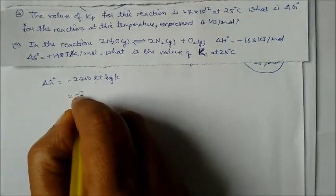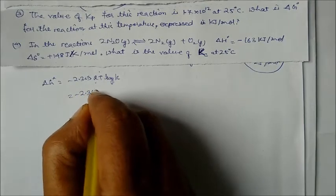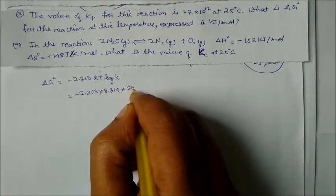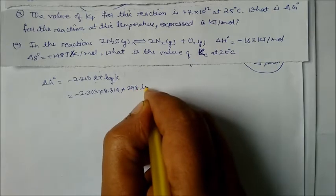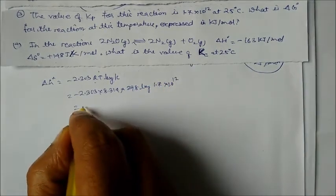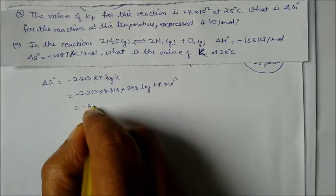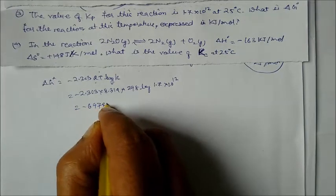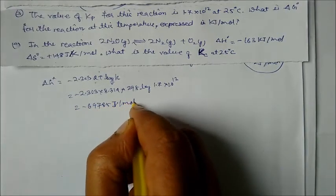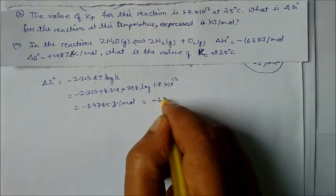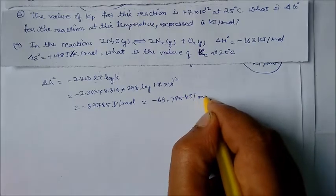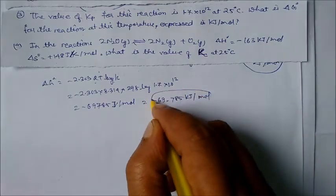Putting in: −2.303 × 8.314 × 298 × log(1.7 × 10¹²) = −69785 J/mol, or equivalently −69.785 kJ/mol. This is our answer.